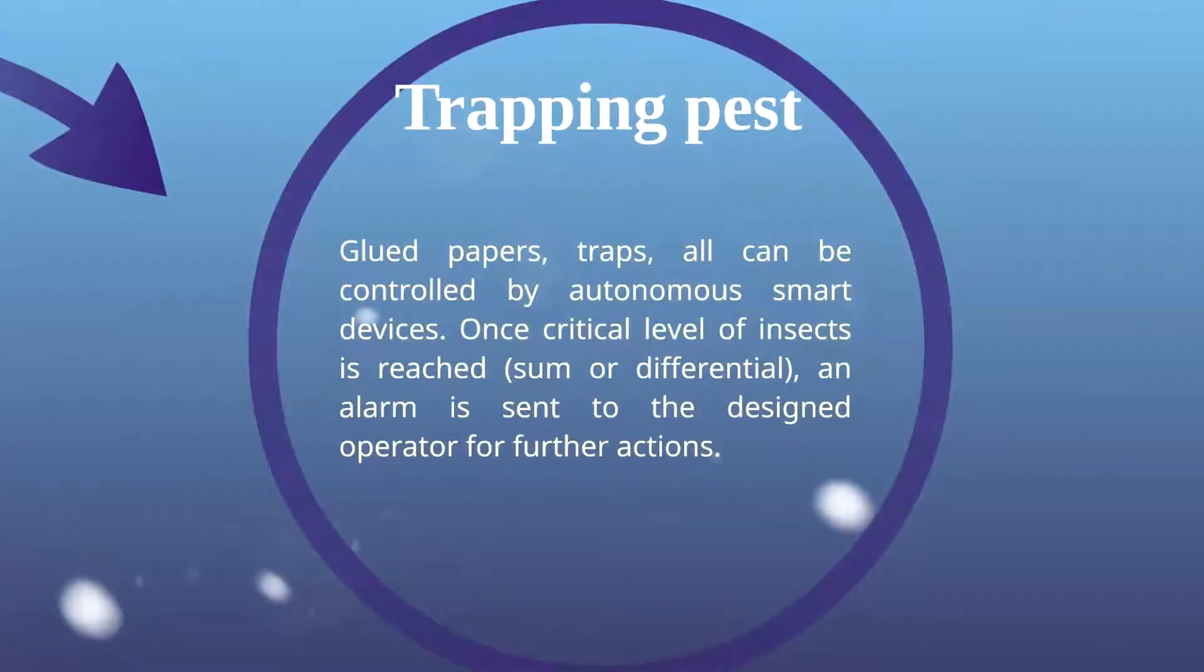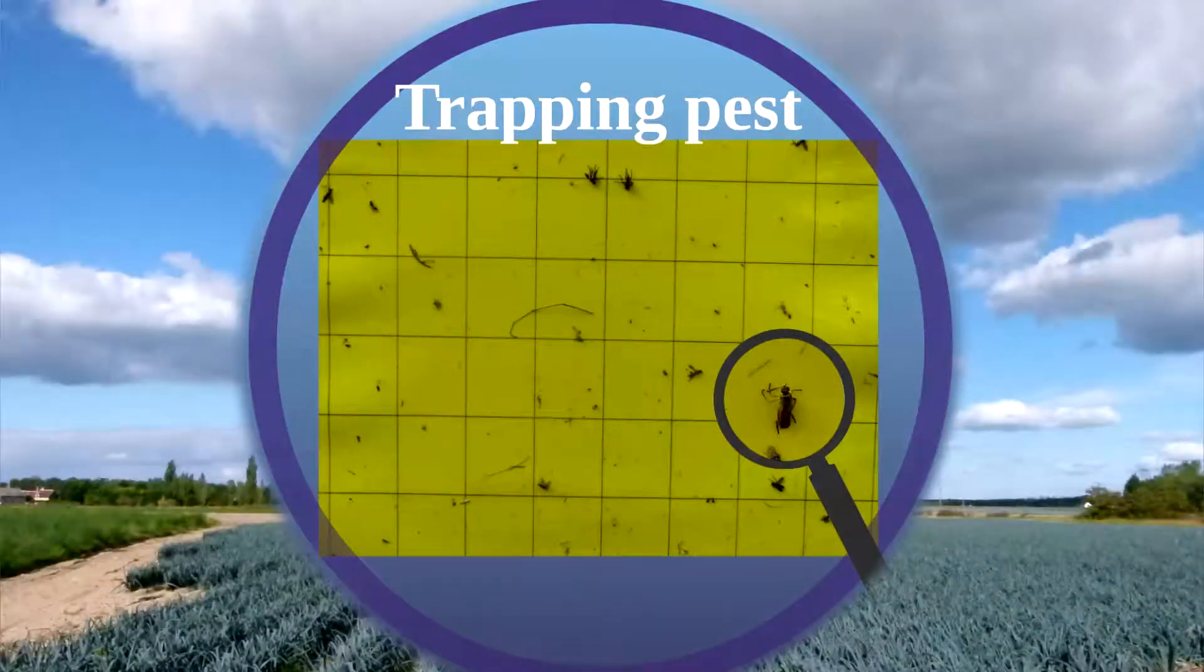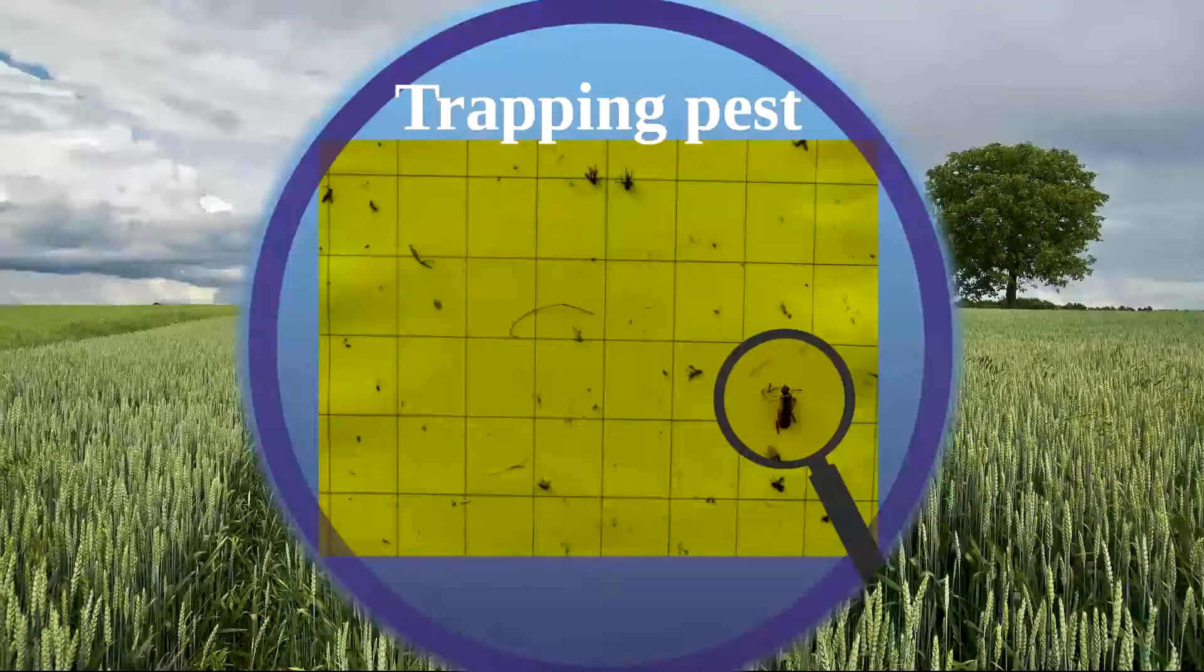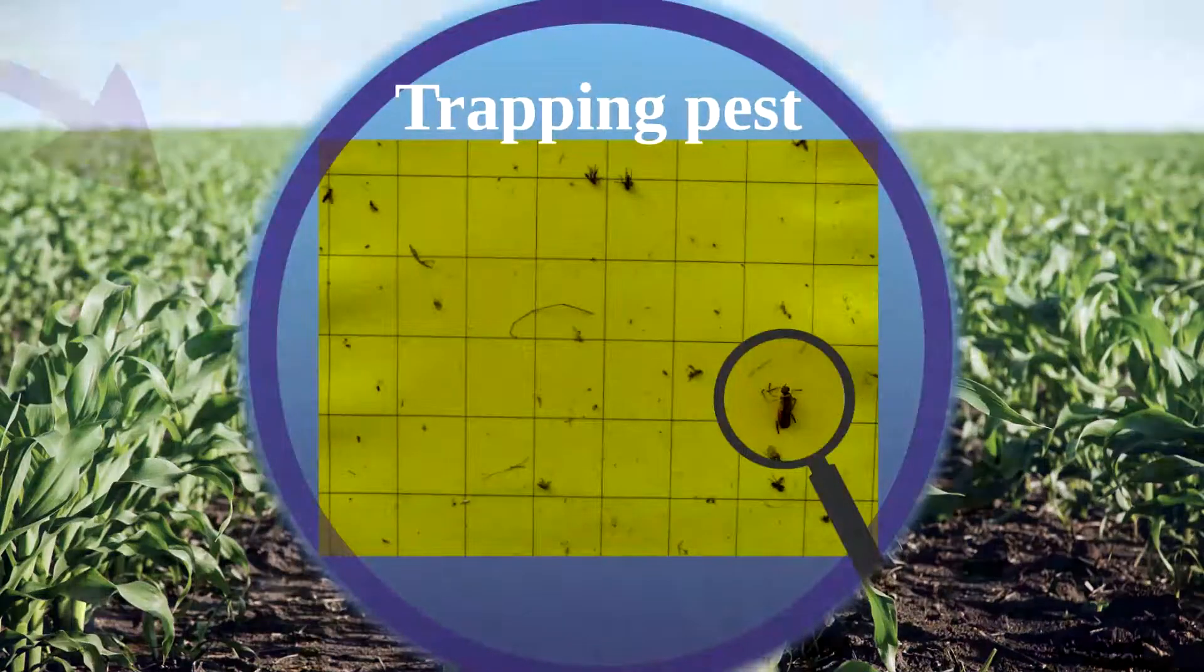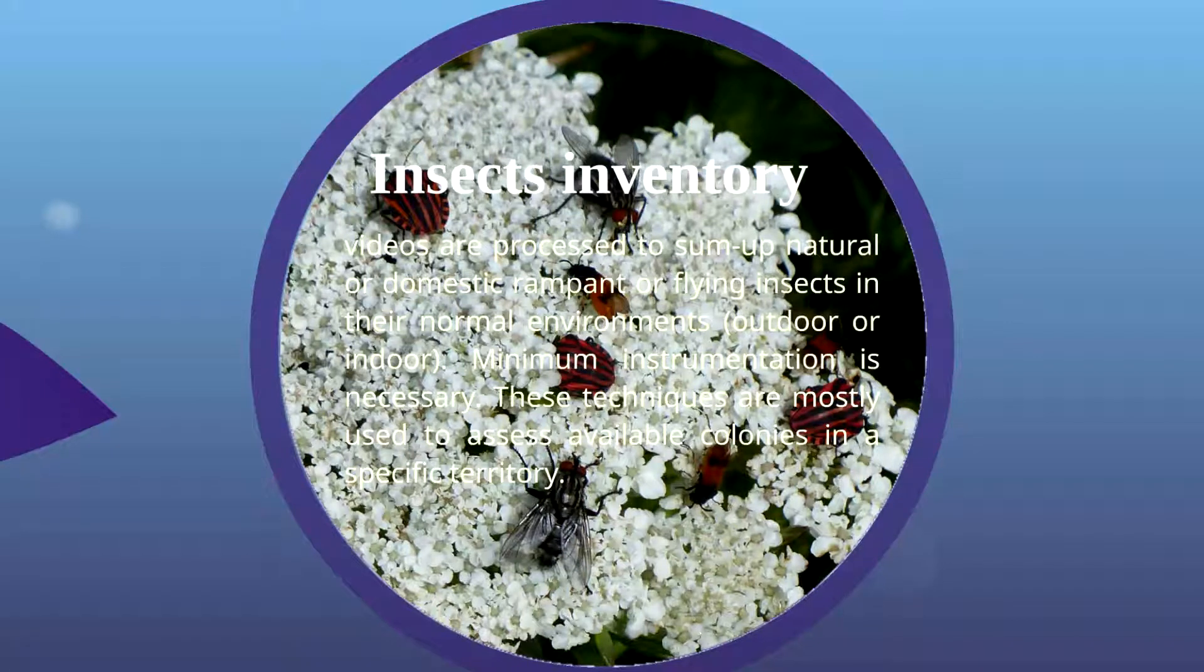The second example identified here is a smart sensor deposited outdoor that automatically sends an alert to the technician once the accumulated number of trapped flies is reached or when a large amount of pests have been glued in a short time. Colonies of insects are summed up and reports are published.